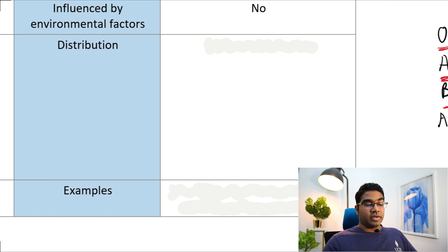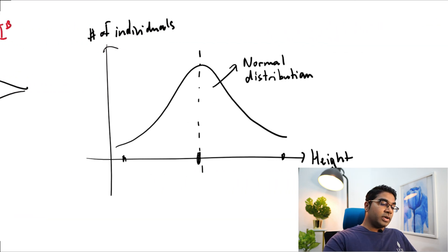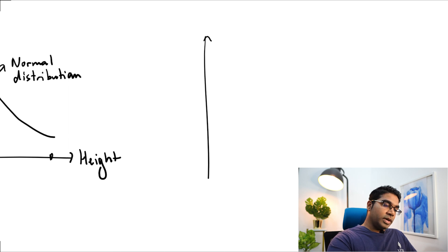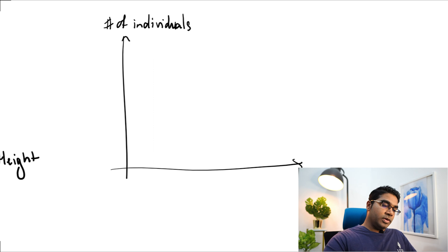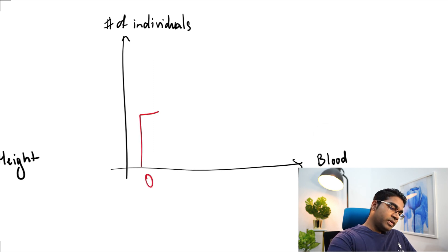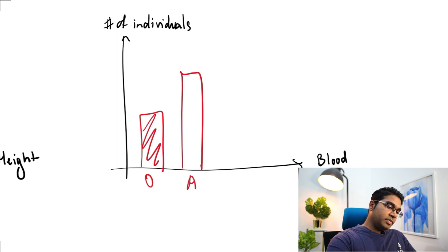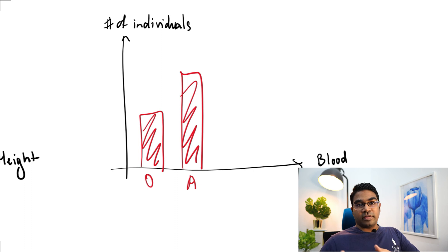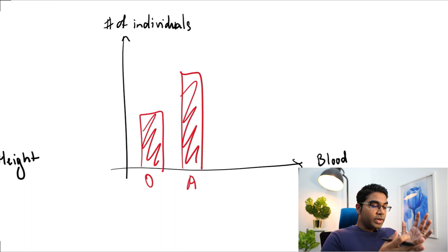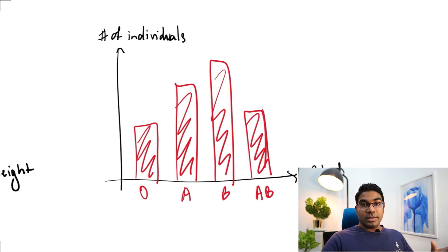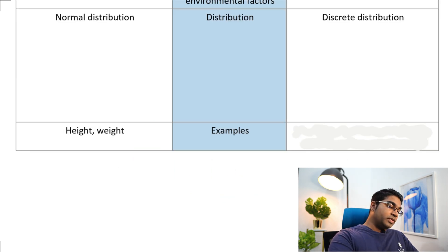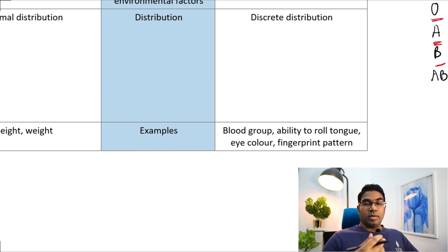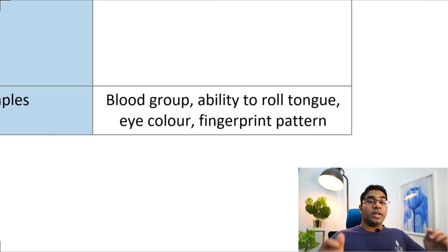Whereas when it comes to discontinuous variation, the type of distribution is usually discrete distribution. We don't have a continuous line like normal distribution. Looking at blood group — number of individuals against blood group — you have blood group O with this many people, then blood group A with this many people. This is not a continuous graph; there is a break in between because there is no value between O and A. It's either O, A, B, or AB. This is a discrete distribution. Examples of continuous variation are height and weight, and examples of discontinuous variation are blood group, the ability to roll tongue, eye color, and fingerprint pattern.